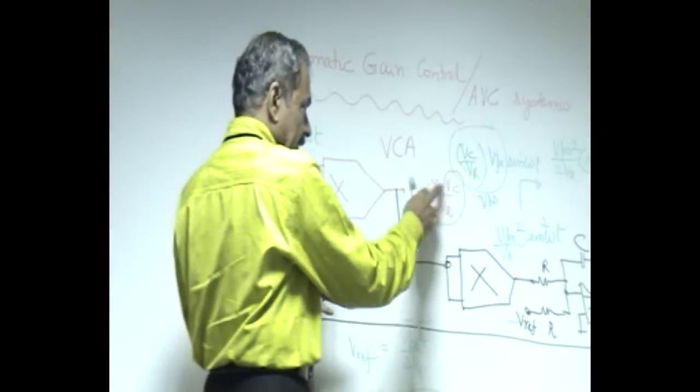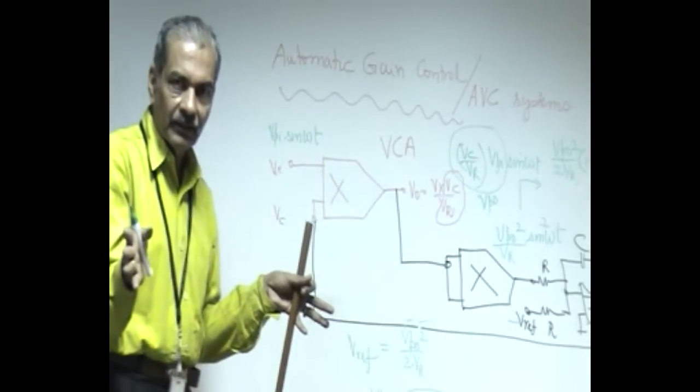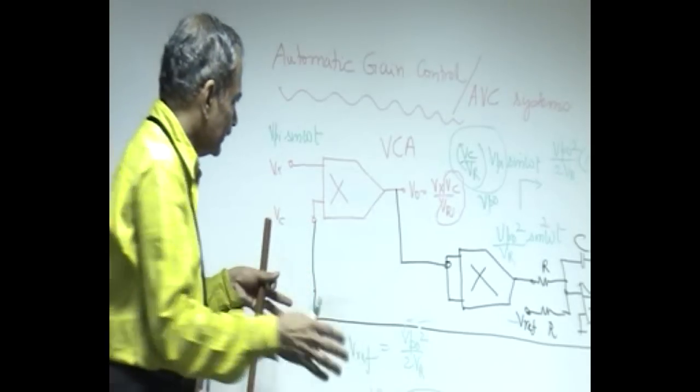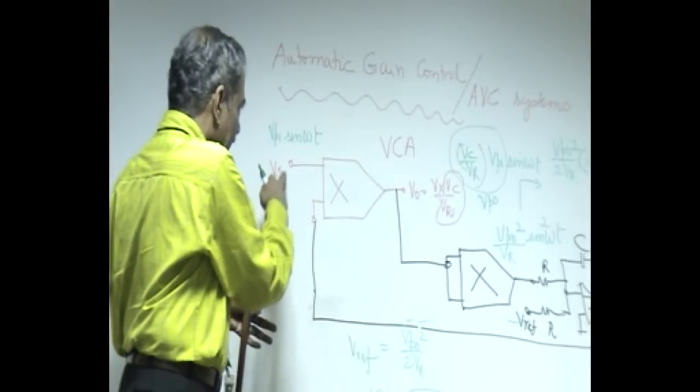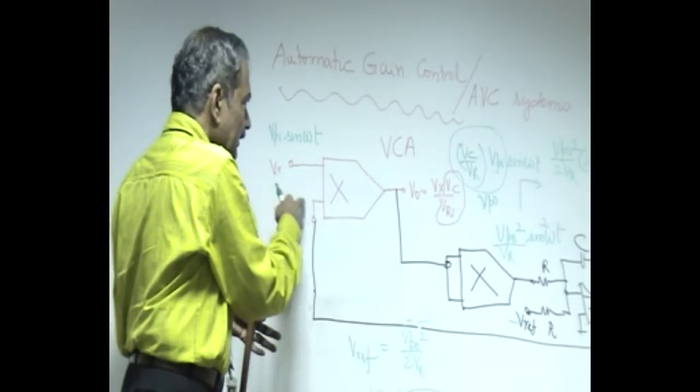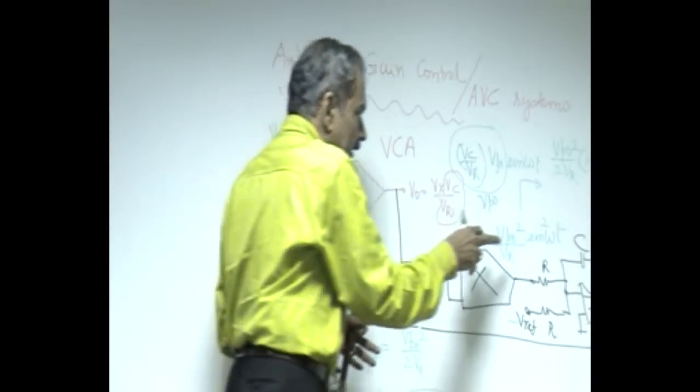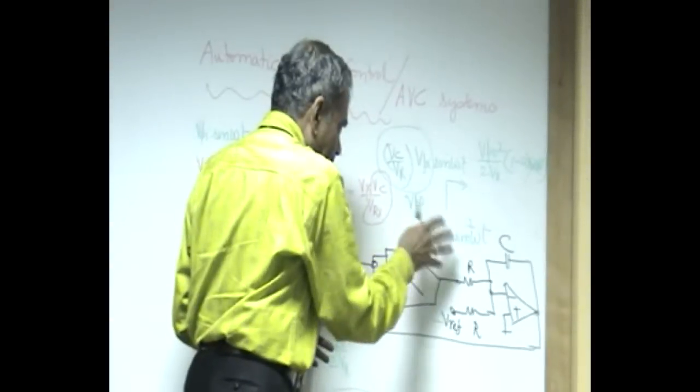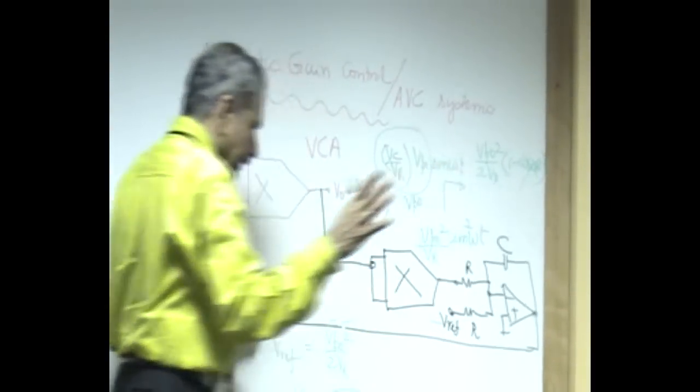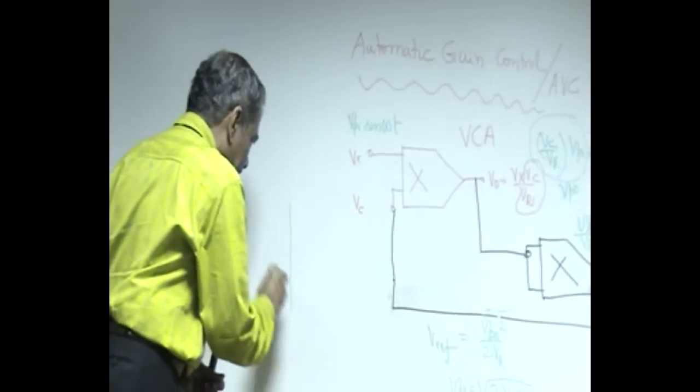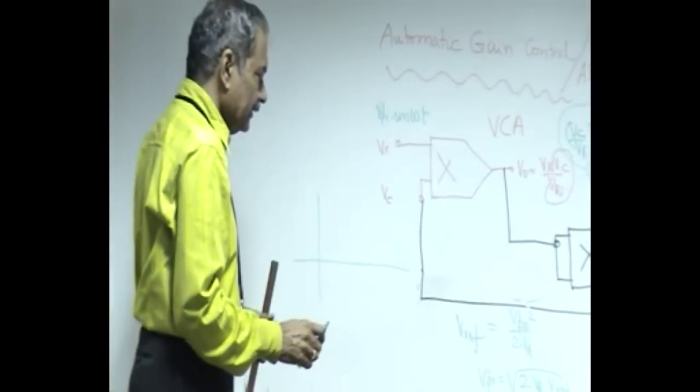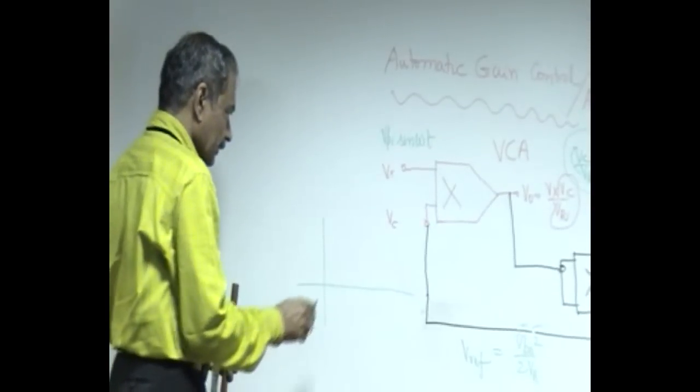So that V_x into V_c by V_r remains constant—that is all this particular control loop is doing. The moment V_x is decreasing, V_c will increase proportionately such that the peak amplitude, the output amplitude, remains constant. This is what establishes this as an AGC or automatic volume control.